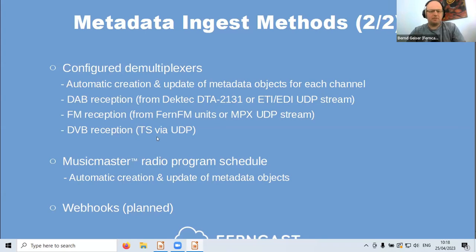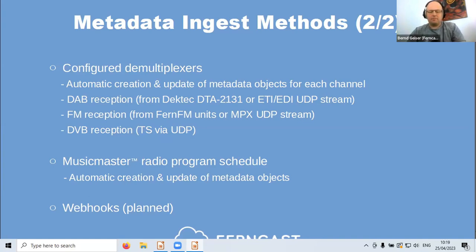There may also be options for DVB reception via transport stream over UDP or ASI. Another upcoming feature is that metadata objects are automatically created and updated from program schedules. We have a recent project to integrate support for Music Master radio scheduling software — we will directly support that and create metadata from the schedule. Another planned feature is a simple webhook: you pass a token and a metadata stream, and that's it — just one HTTP request. That's a whole lot of methods to get metadata into the system.